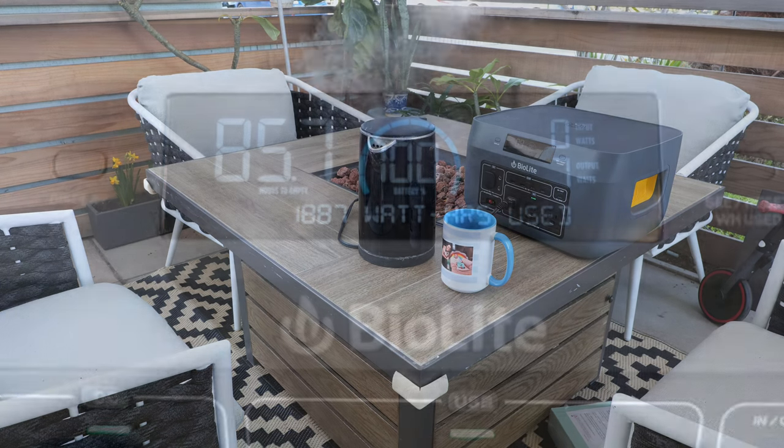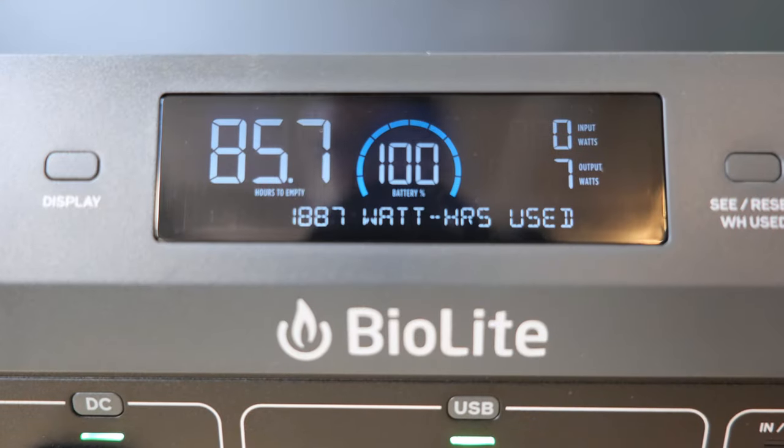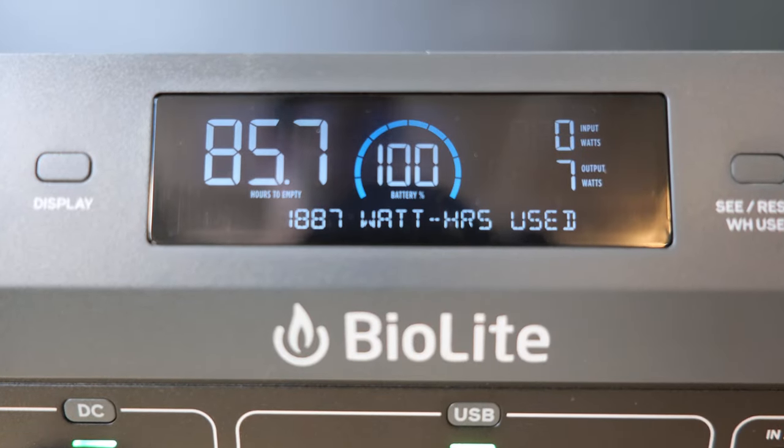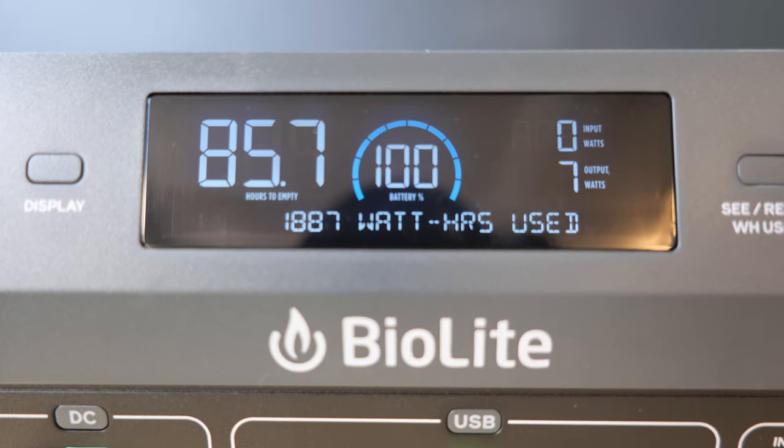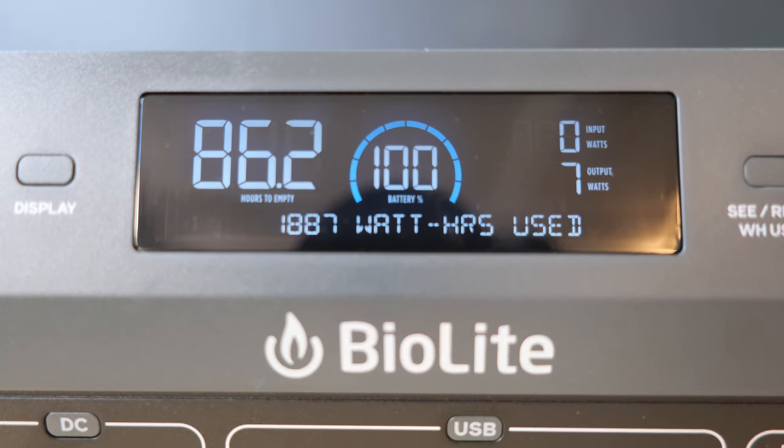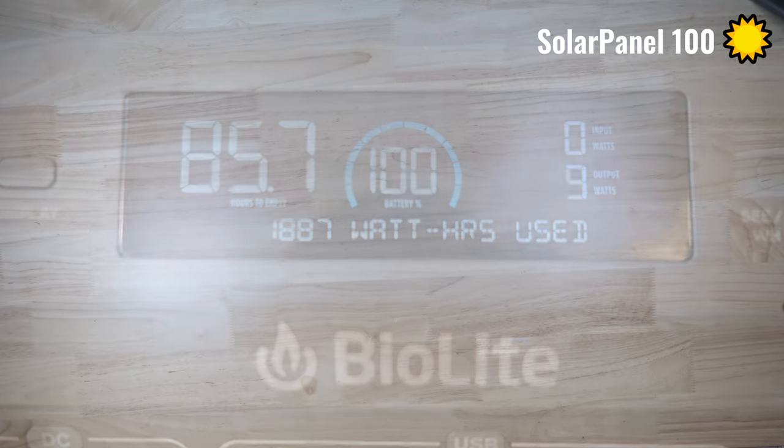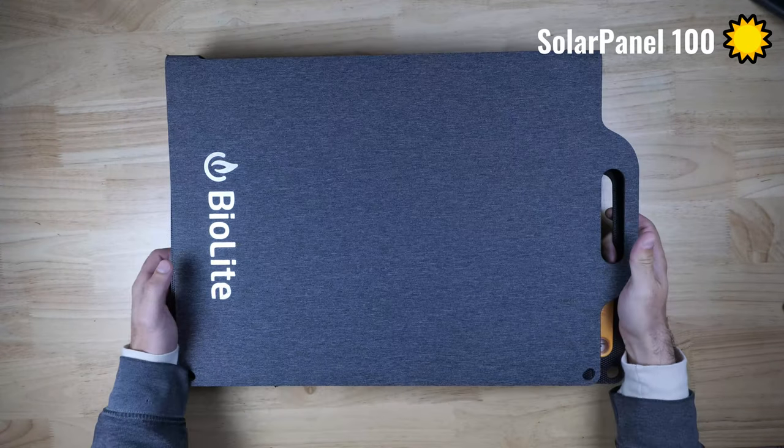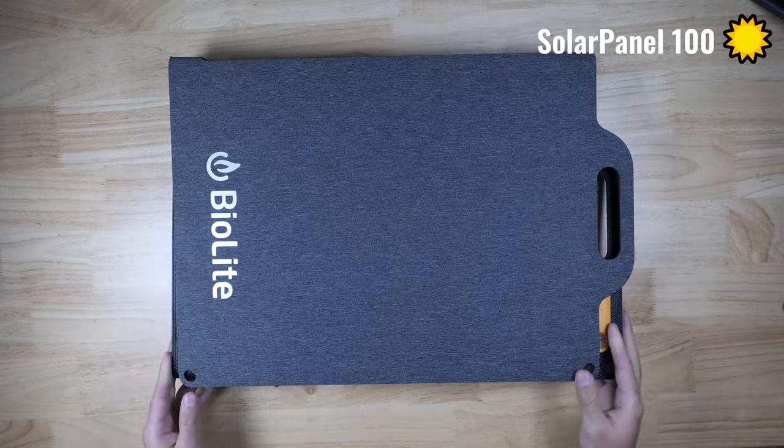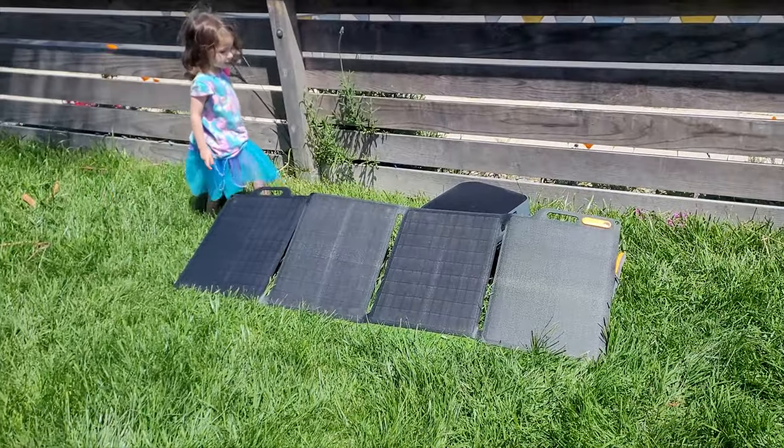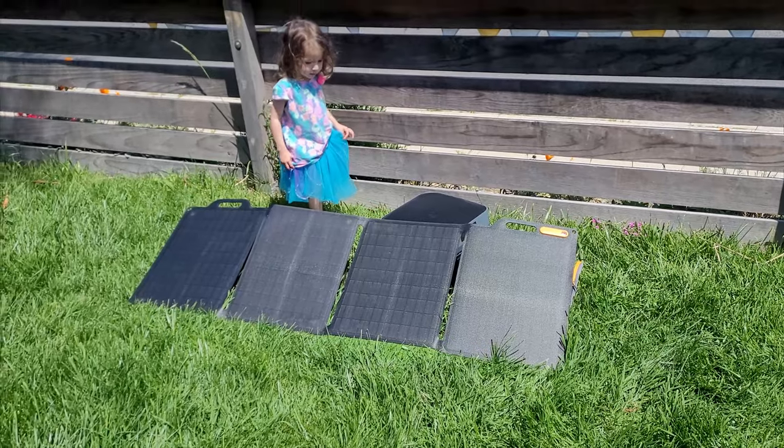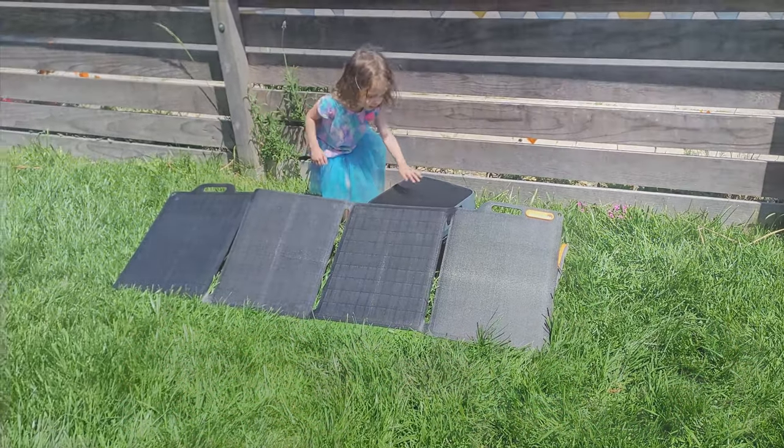The base charge is definitely a really nice size unit and it can do a lot and having the ability to keep at least some basic electronics going in an emergency is a fantastic ability to have. If you do want to take your grid down capabilities a bit further there is a solar panel which can be purchased separately from BioLite and this will give you the ability to charge your devices indefinitely in an emergency situation and I'll also be testing this panel out and putting a link down to that video below as well.